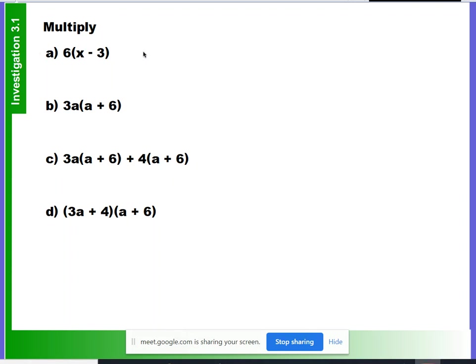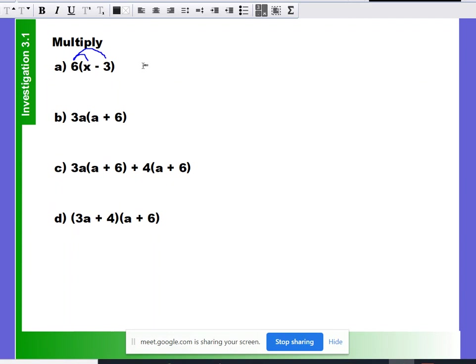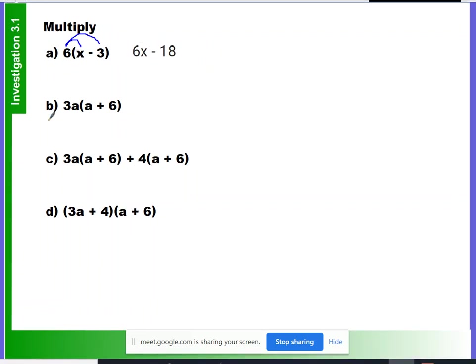Volunteers for Claudia, okay yeah put your name in there so we can see you. All right, so how did you do question a? Excuse me, all right so you got 6x minus 18 because you distributed the 6 to the x and you distributed the 6 to the negative 3. Okay, do I have a new volunteer as tribute for question b?